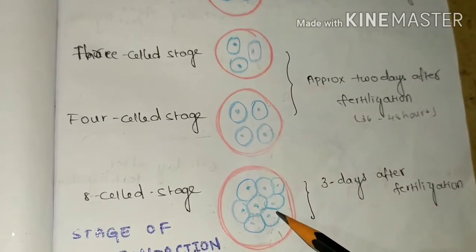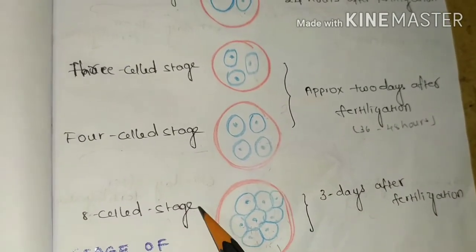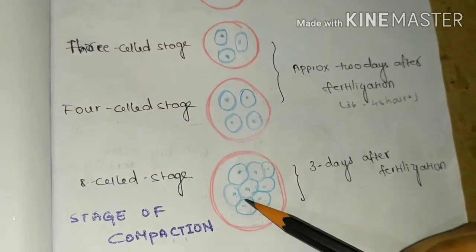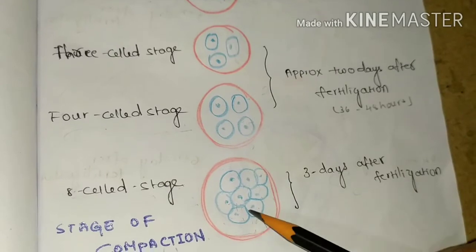During third phase of mitotic division, eight-cell stage is formed. Up to eight-cell stage, the cells are packed loosely and the cell boundaries are marked clearly. After eight-cell stage, the cells are compacted. They become close to each other.